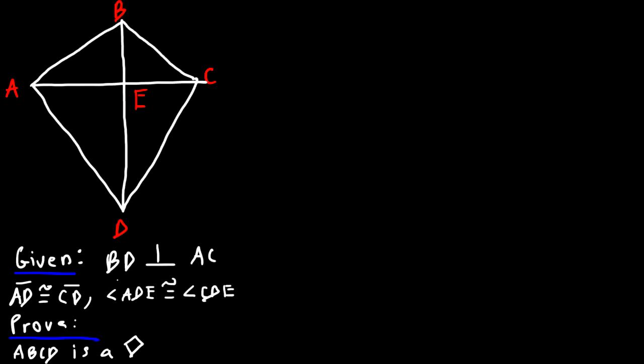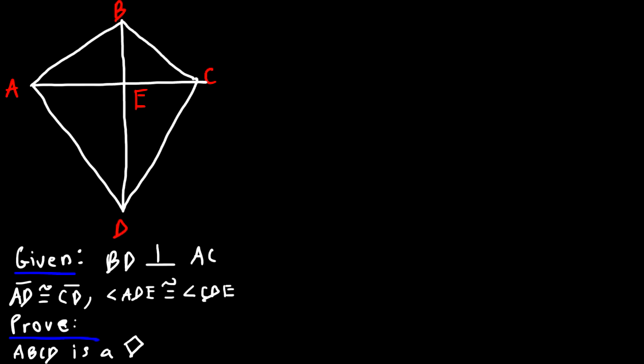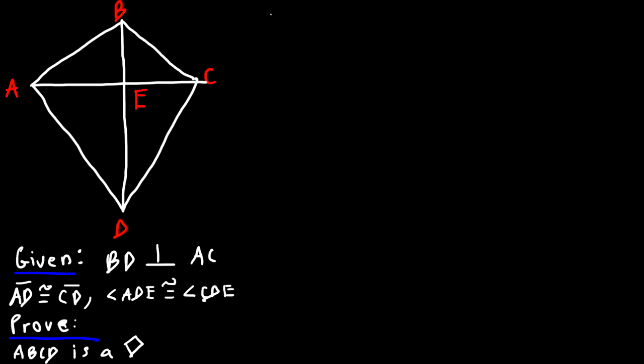Keep in mind, in order to prove that it's a kite we need to show that BD is the perpendicular bisector of AC. We're already given that those two are perpendicular, but we also need to prove that AE and EC are congruent. Let's begin with our two-column proof — statements on the left and reasons on the right.